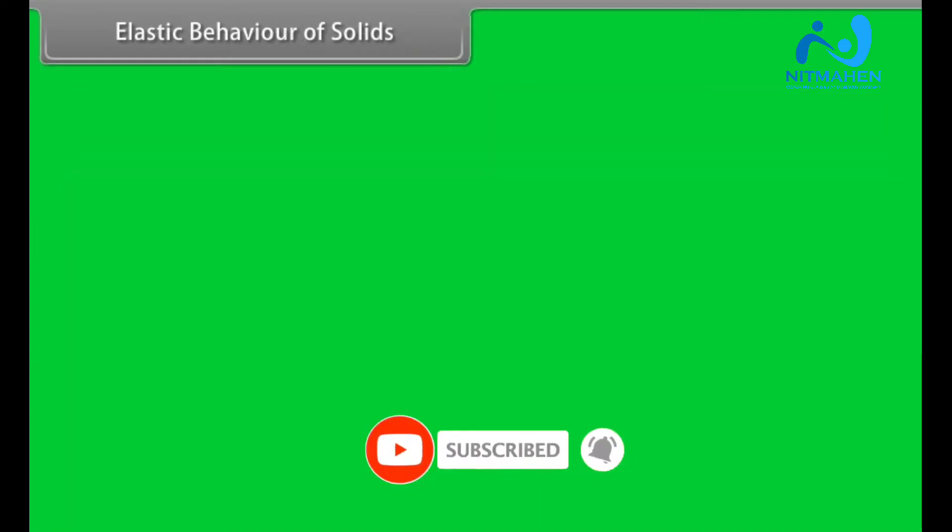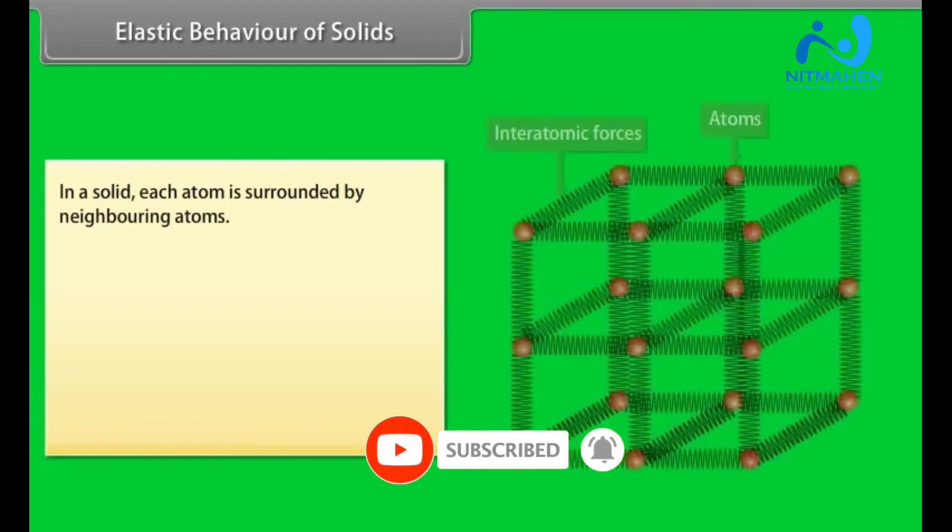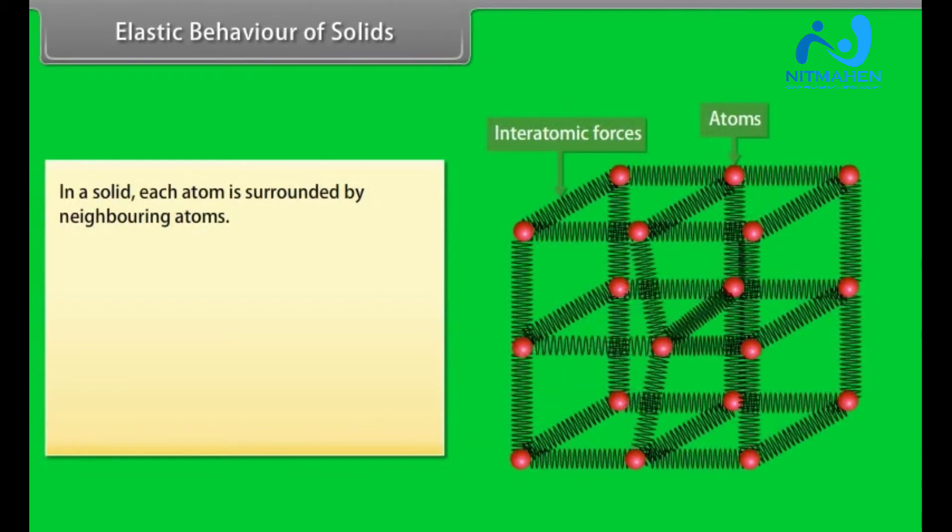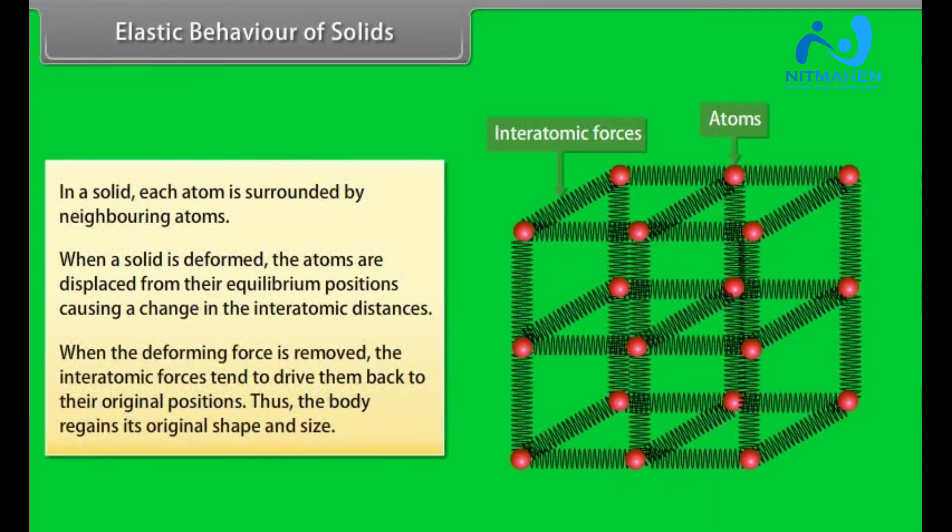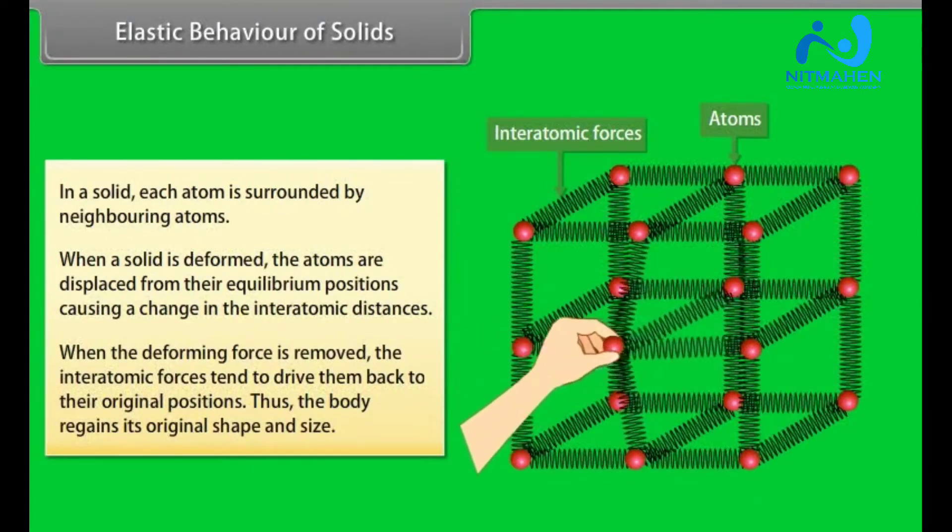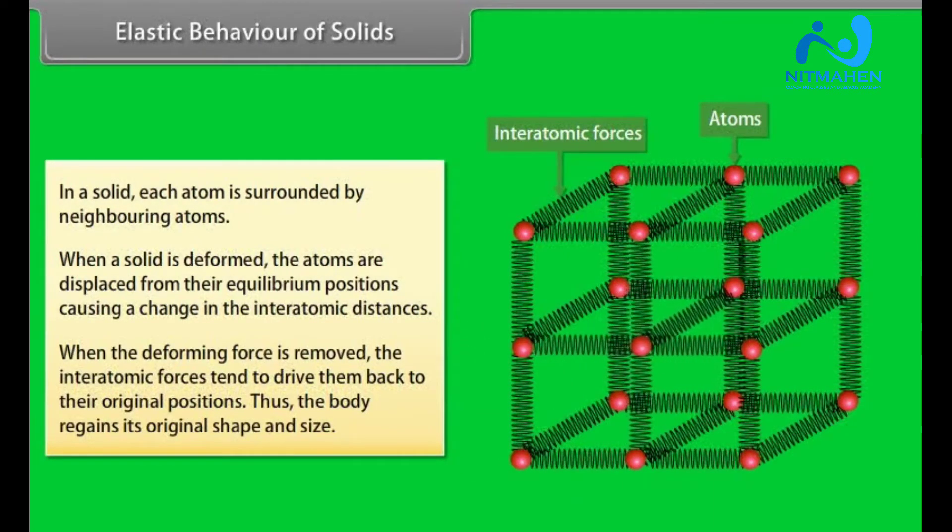Elastic behavior of solids. In a solid each atom is surrounded by neighboring atoms. When a solid is deformed, the atoms are displaced from their equilibrium positions, causing a change in the interatomic distances. When the deforming force is removed, the interatomic forces tend to drive them back to their original positions. Thus the body regains its original shape and size.